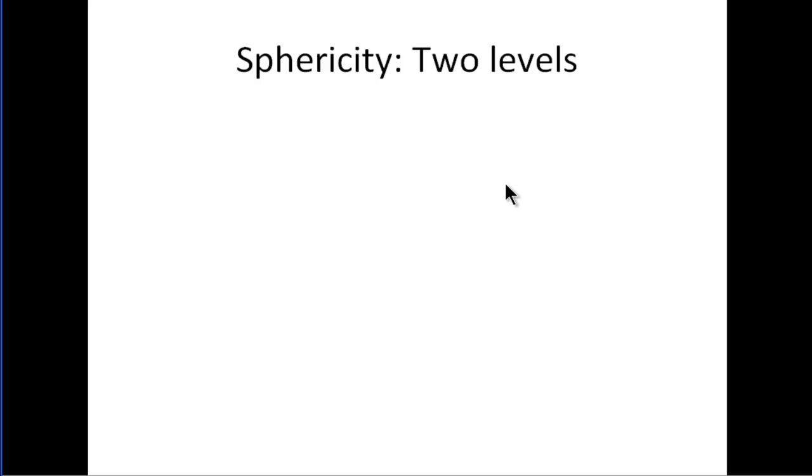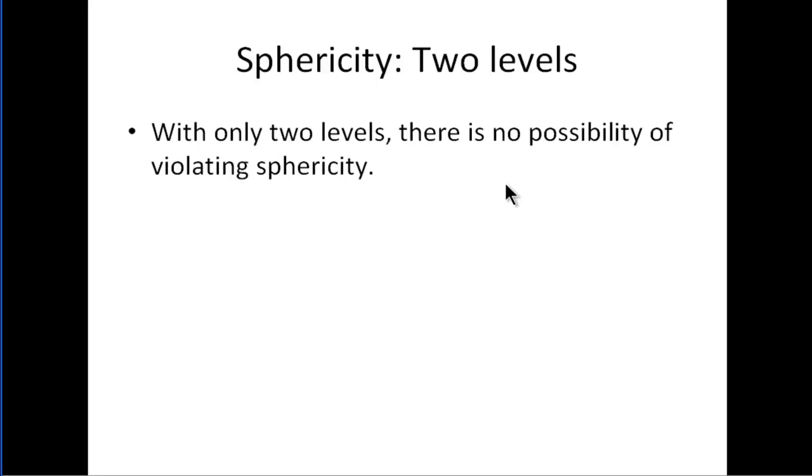And that's because there are only two variances and one covariance. There's only one sum of the variances minus two times covariance that you can calculate. You can't compare it against any other comparison—there's only one comparison, there's only one sum of the variance minus covariance.